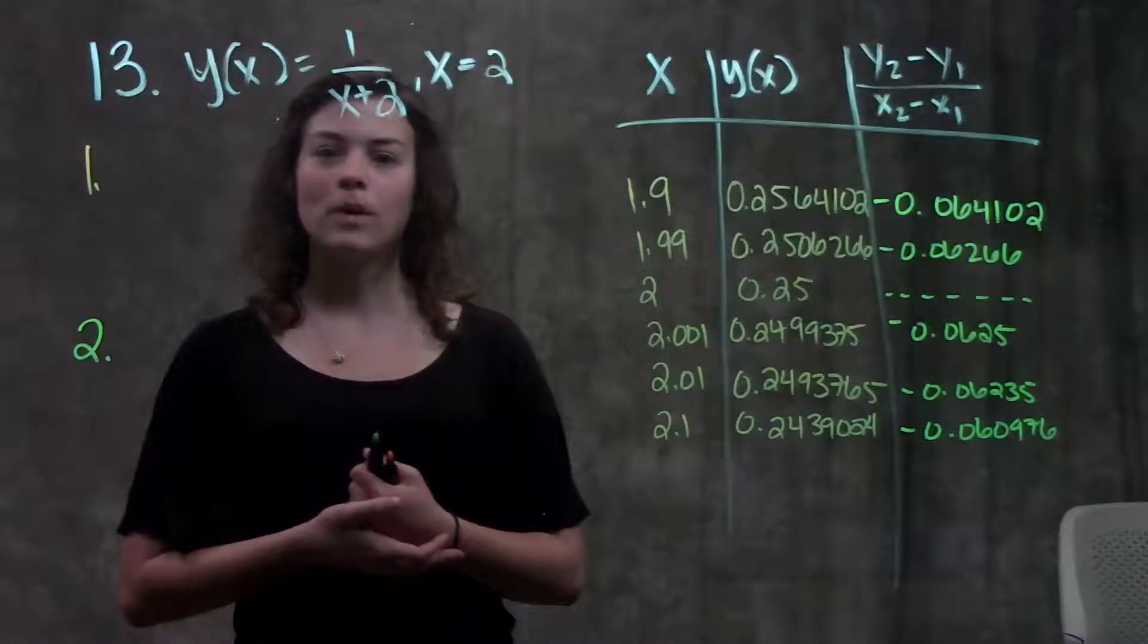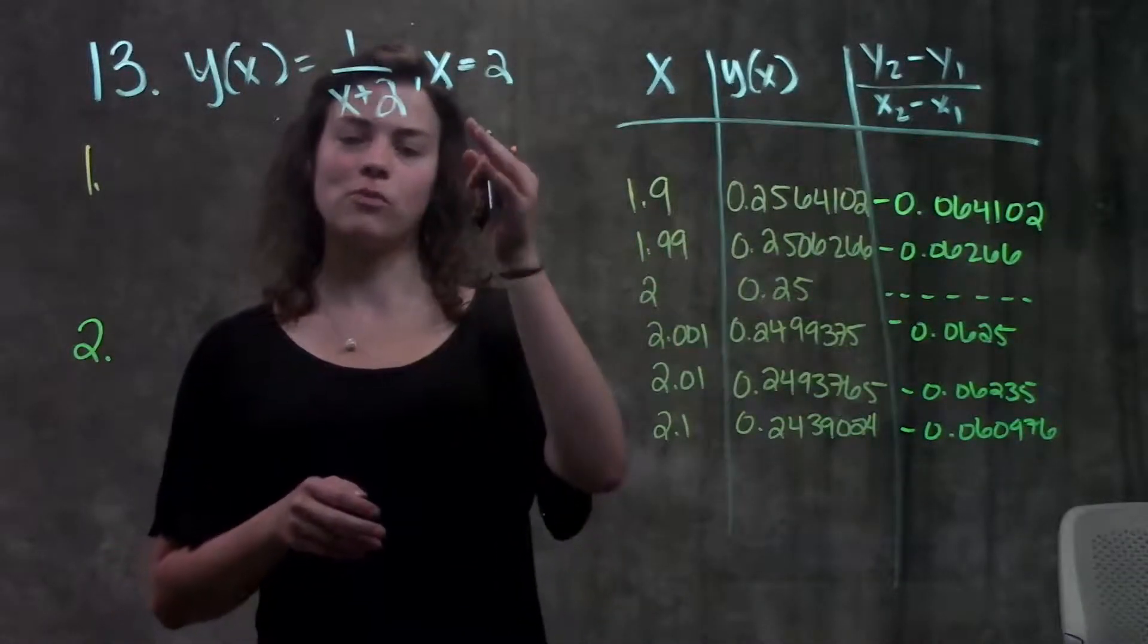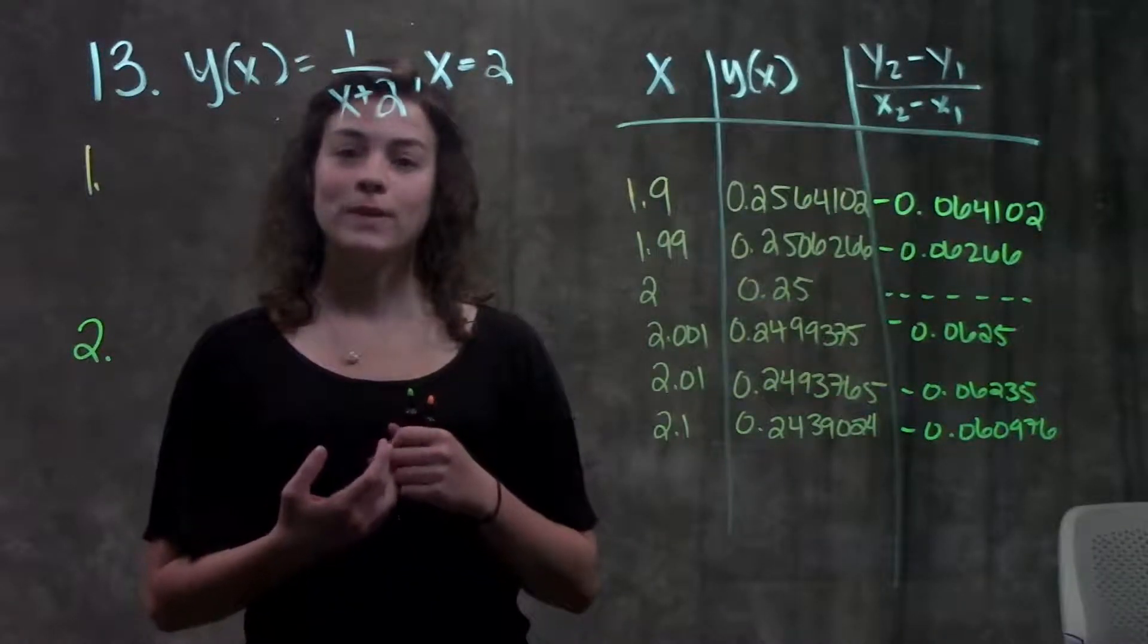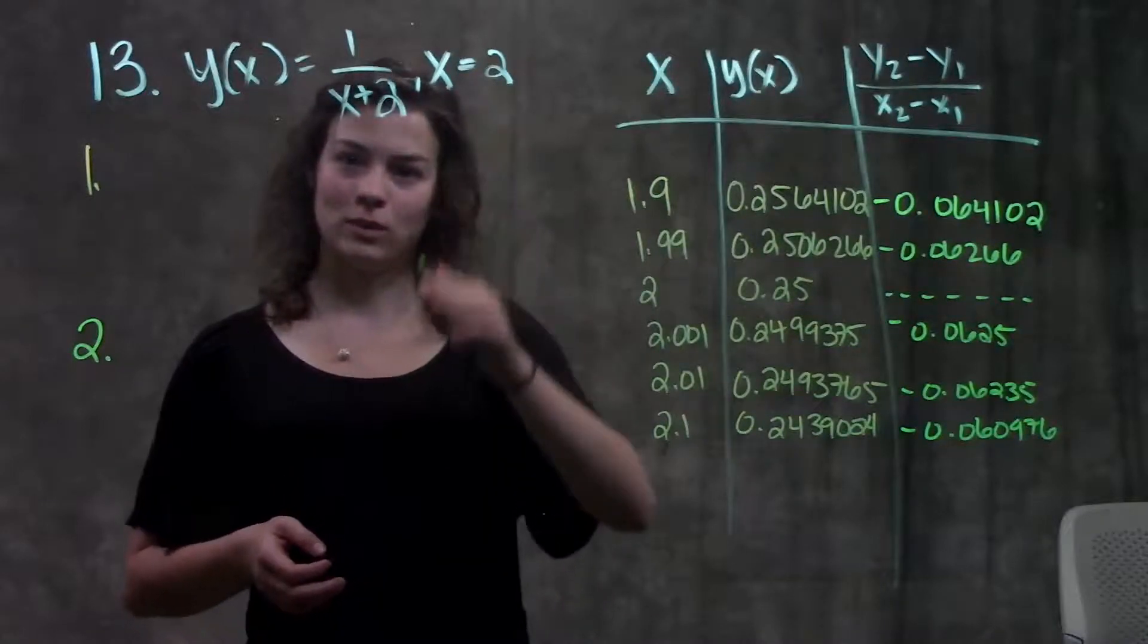If you remember when we estimate slope, we want to find a bunch of points closer and closer to our point of interest and find the slope between all of those points in order to get a good estimate of what the instantaneous slope is at this one point.